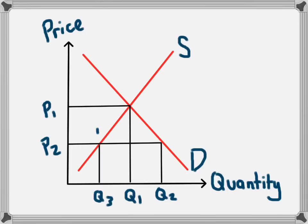This now gives us an excess of demand. There is too much demand for this product. Consumers are demanding Q2, but businesses are only selling Q3.